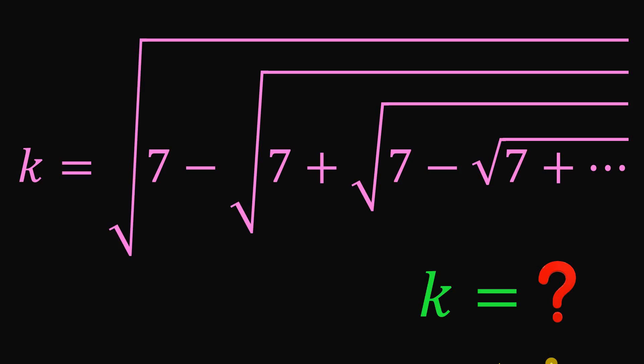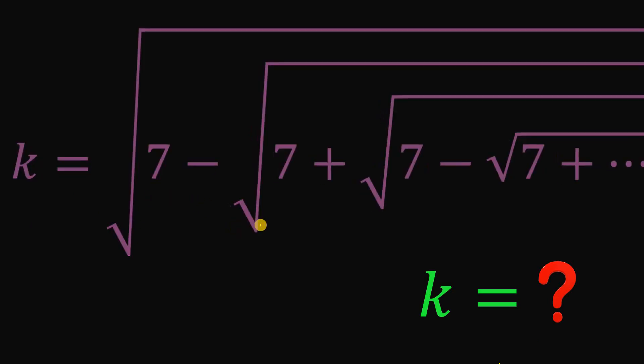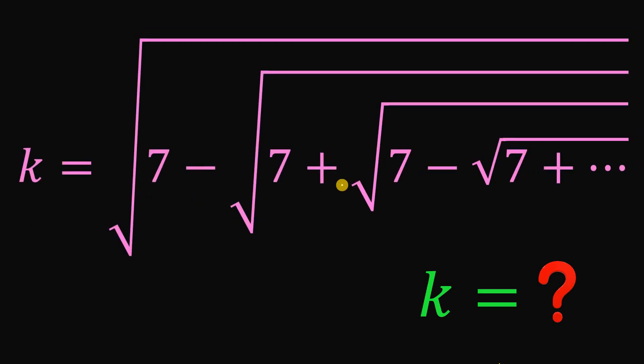What is the value of k? Given this equation, k equals the square root of 7 minus the square root of 7 plus the square root of 7 minus the square root of 7 plus, continuing until infinity. Our goal in this question is to solve for the value of k. You can pause this video if you want to give this problem a try.